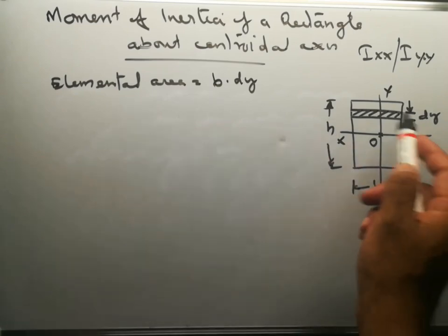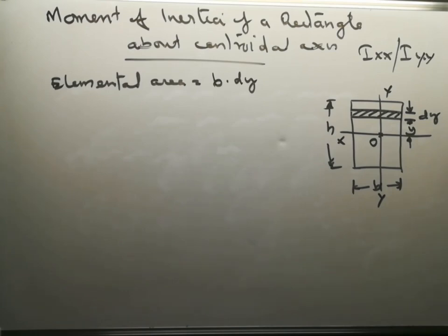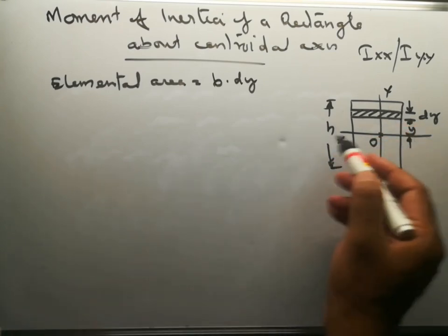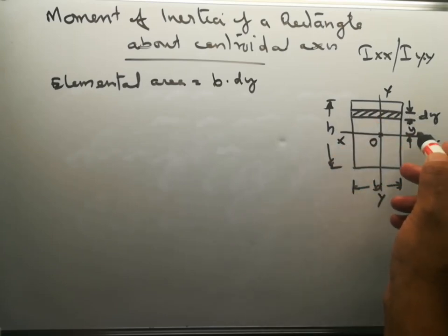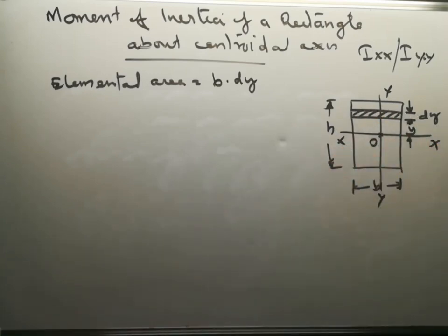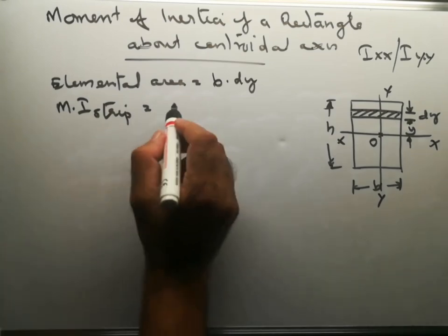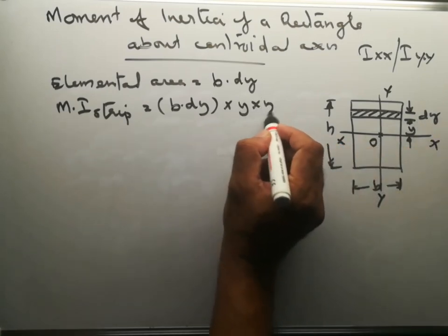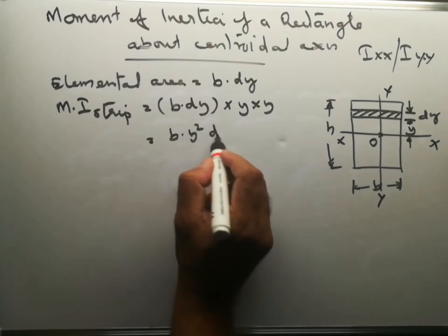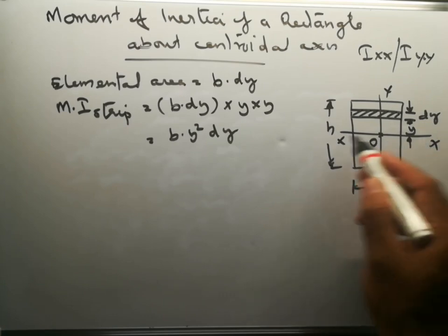The elemental area of this strip is B times dy. Now, the moment of inertia of this element about the XX axis is area times the square of the distance. So the moment of inertia of this strip equals B times dy times y times y, which is equal to B times y squared times dy.